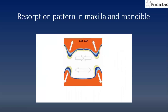Another illustration shows the resorption pattern in the maxilla and mandible. In the maxilla, the bone level was originally higher, but as resorption progresses it has moved up and inward. So the pattern of resorption is upwards and inwards in the case of the maxilla. Whereas in the case of the mandible, the bone level has moved downward and the pattern is outwards and downwards.